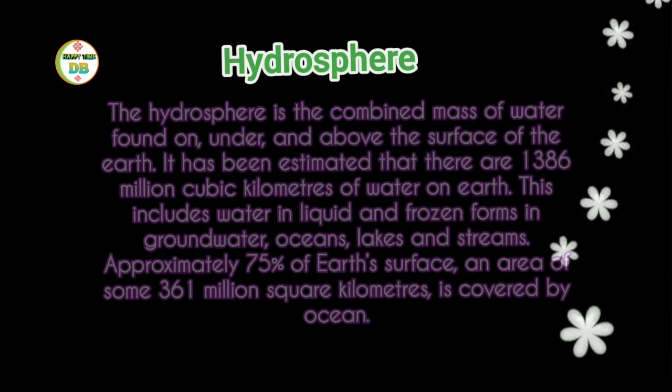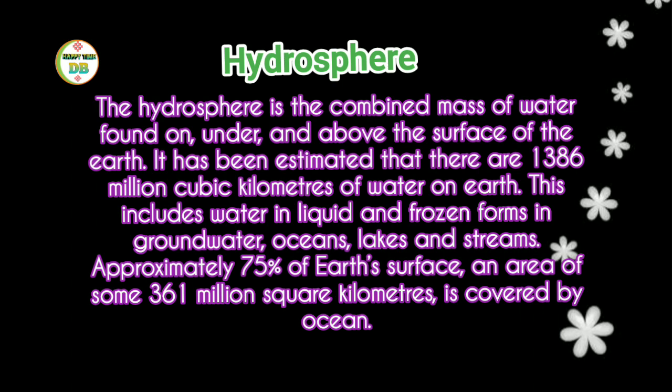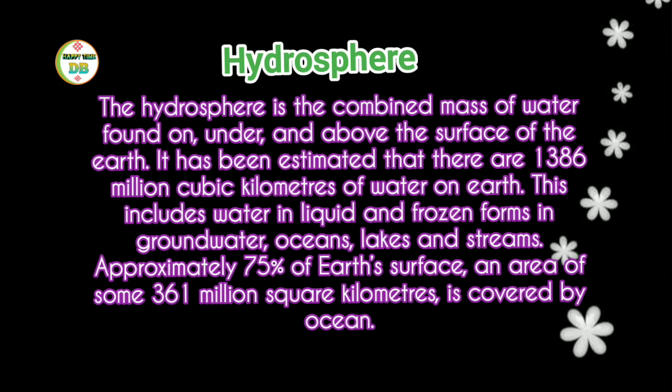The hydrosphere is the combined mass of water found on, under, and above the surface of the Earth. It has been estimated that there are 1,386 million cubic kilometers of water on Earth. This includes water in liquid and frozen forms in groundwater, oceans, lakes, and streams. Approximately 75% of Earth's surface, an area of some 361 million square kilometers, is covered by ocean.